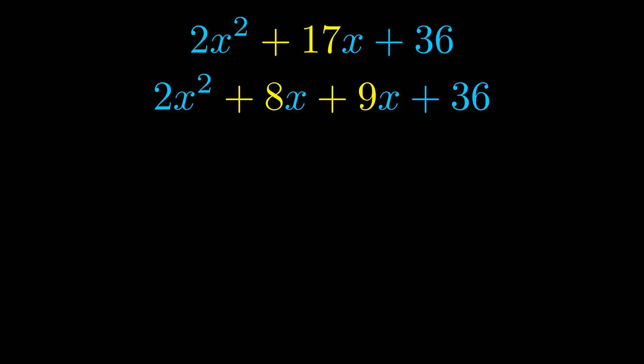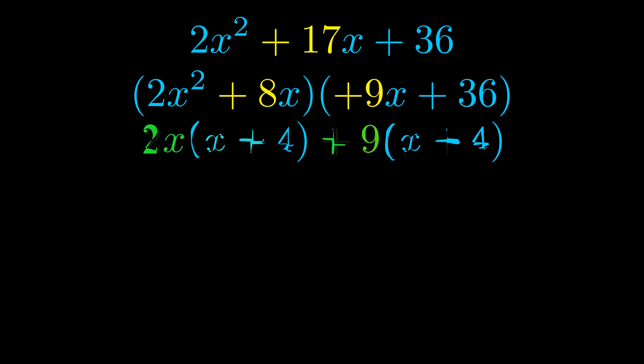Once we've done this we go ahead and we put parentheses around the first term and the last term. And we do that so that we can take the greatest common factor out of both terms. We can see the greatest common factor is now outside in green.